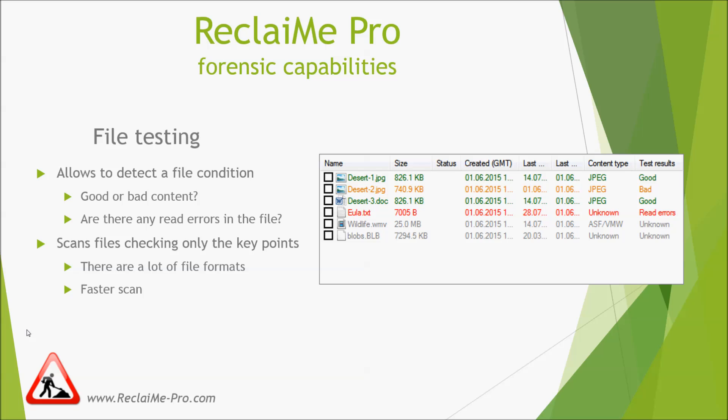Additionally, it may happen that the format of a file does not match its extension. For example, some files have a DOC extension while actually they are just text files. When testing, files are checked in accordance with the found data format. If you want to select all files for which the extension does not match the file content, use a special search function built into Reclaiming Pro. You should use the results of file testing with some healthy skepticism — take it as an approximate estimate of the recovery quality.